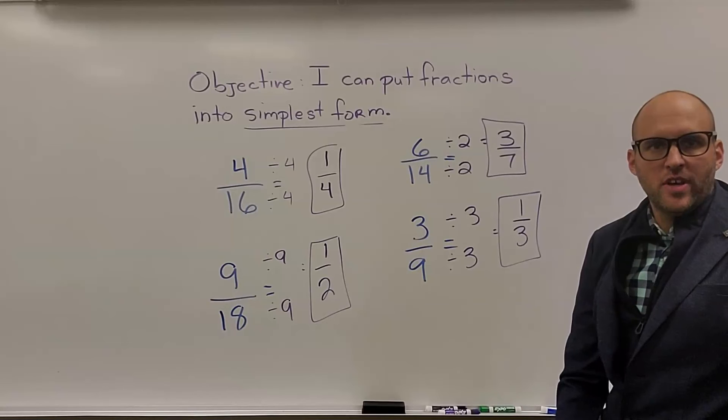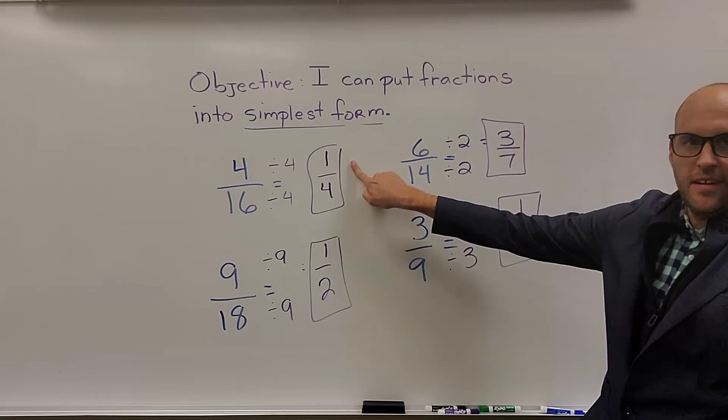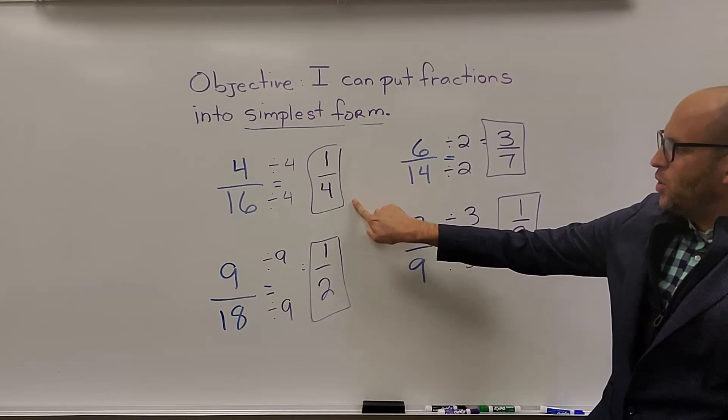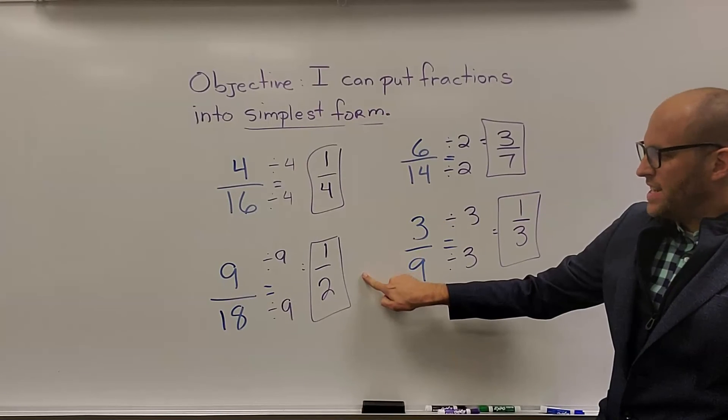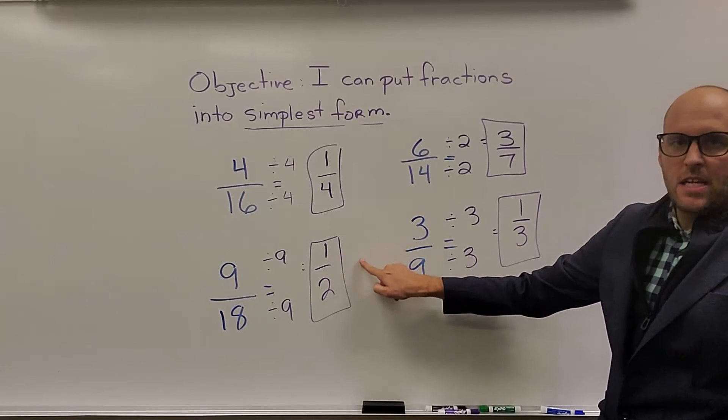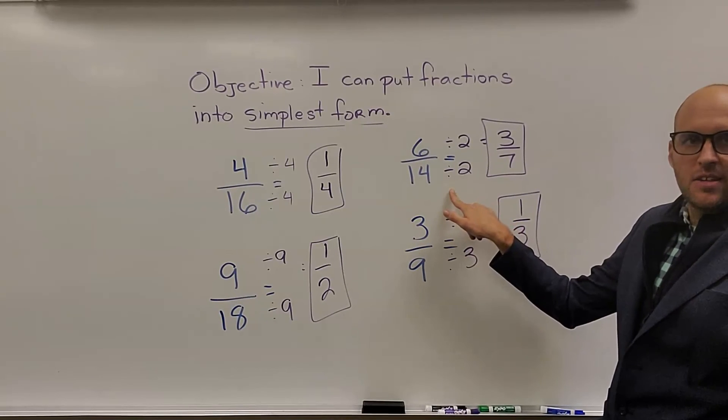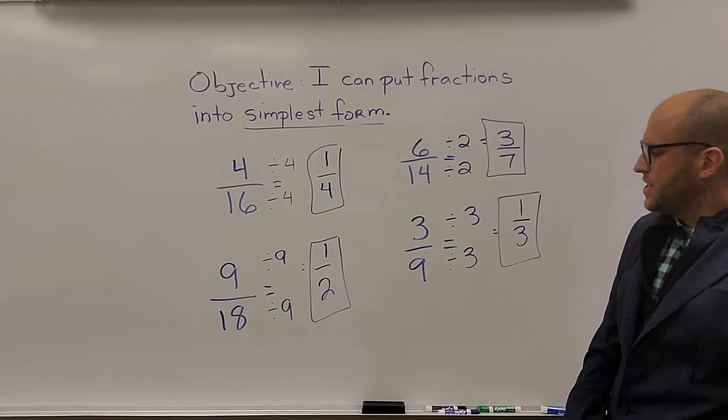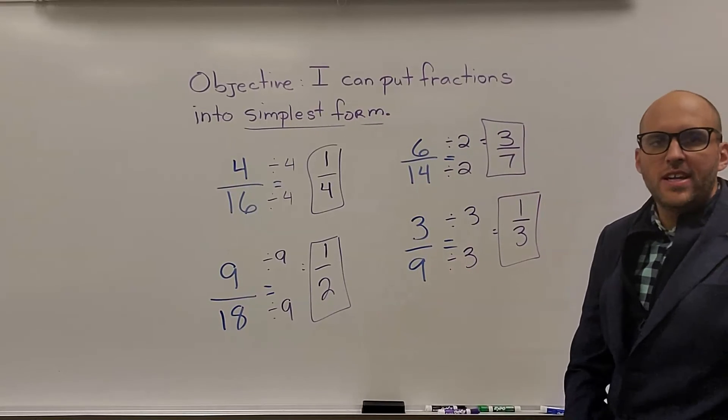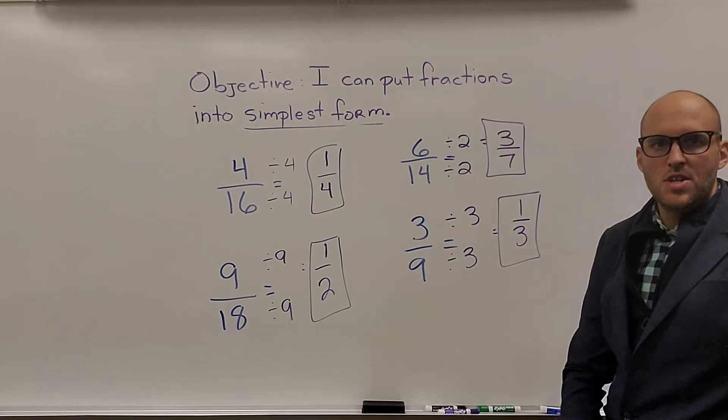How many did you get right, friends? Let's find out. For the first one, the greatest common factor was four. When we divide, we ended up with one fourth. For our second problem, the greatest common factor they both have in common was nine. So when we divided, we ended up with one half. For our third problem, the greatest common factor they had in common was two. And when we divided, we ended up with three sevenths. And for our last problem, the greatest common factor they both had in common was three. And we ended up with one third.